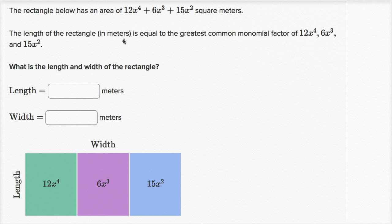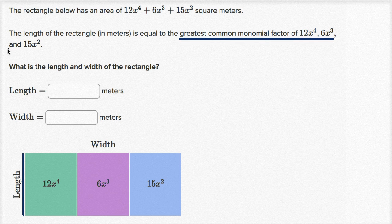The length of the rectangle in meters — the distance shown here — is equal to the greatest common monomial factor of 12x to the fourth, 6x to the third, and 15x squared. What is the length and width of the rectangle? I encourage you to pause the video and try to work through it on your own.